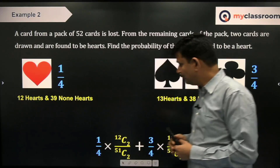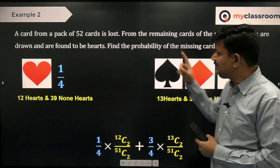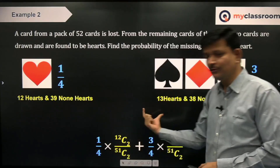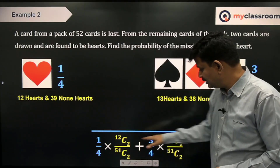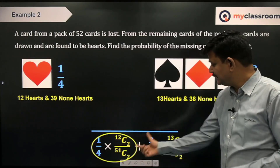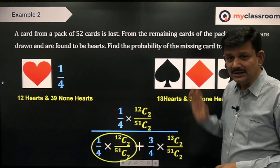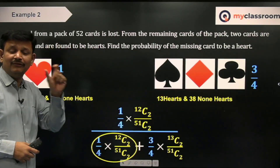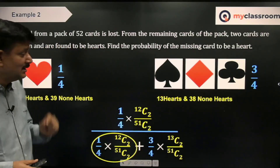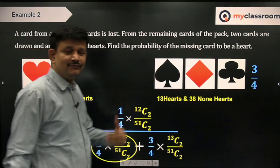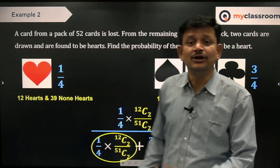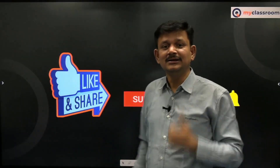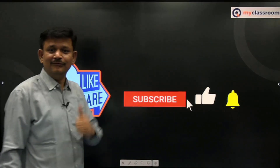Now what is the question? You want to find the probability that the missing card is a heart — corresponding to the first case. So this part goes in the numerator: (1/4) × (12C2 / 51C2), and the total probability is the denominator. This is your final result: given that both cards drawn from the 51-card pack are found to be hearts, the probability that the missing card is a heart. So whenever the final outcome is given to you and you are finding the probability of the intermediate, it is Bayes' Theorem. Like the video, like the channel, subscribe to it and wait for a lot more.